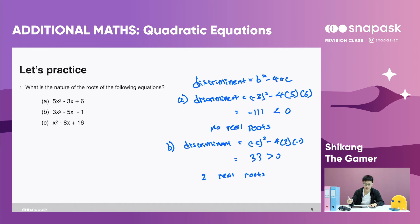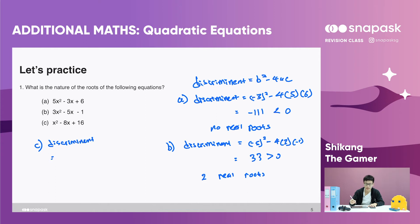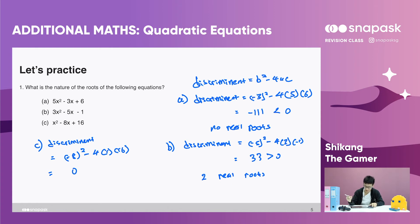For the last part, we have x squared minus 8x plus 16. Finding the discriminant: negative 8 squared minus 4 times 1 times 16. You will find it to be equal to zero, so here we have one real root.